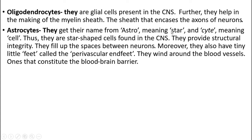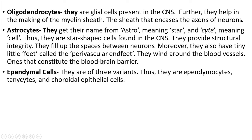Then astrocytes. They get their name from 'astro' meaning star and 'cyte' meaning cell. These star-shaped cells are found in the central nervous system. They provide structural integrity and fill up the spaces between the neurons. They also have tiny little feet called perivascular end-feet, which wind around the blood vessels that constitute the blood-brain barrier.